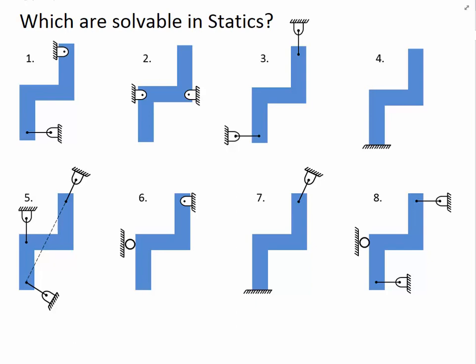Now let's walk through an example of which bodies are solvable in statics. There are fundamentally three criteria. First: what is the number of support force components? We're looking for three. Less than three means not fixed; more than three means not determinate. The golden number is three. Second: are all support forces parallel? If so, not fixed for translation. Third: do all three support force components intersect at one single point? If yes, not fixed for rotation.